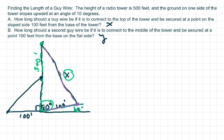and so we're going to use law of cosines, which is X squared equals 500 squared plus 100 squared minus 2 times 500 times 100 cos of 80 degrees.